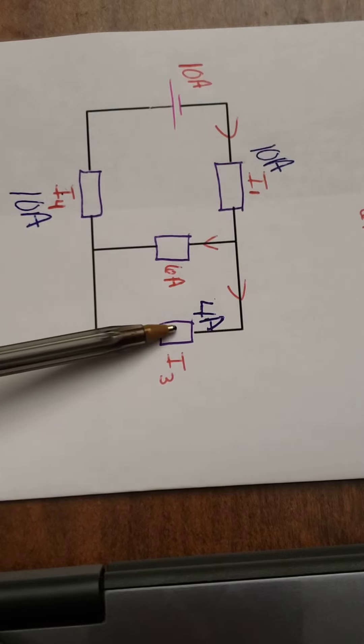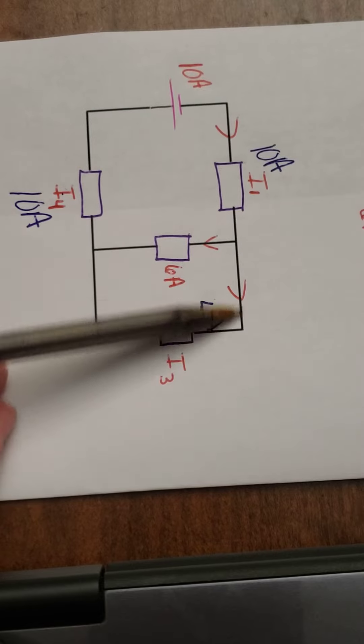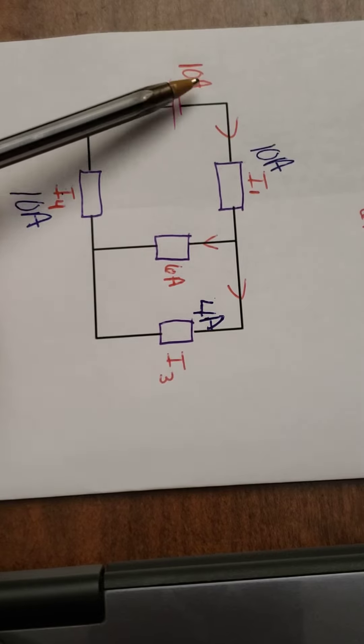These two are in parallel, which just means some of it went this way, some of it went that way. But when I add them together, they give me the total.